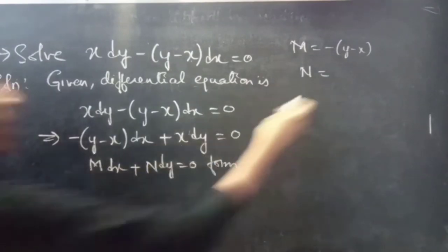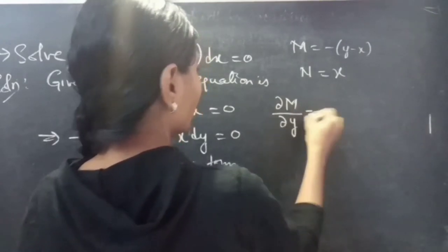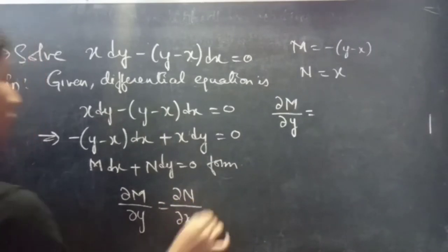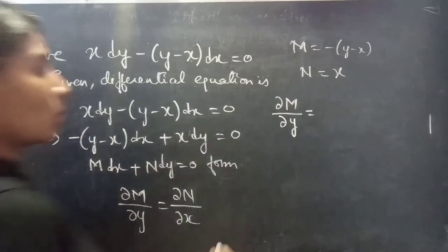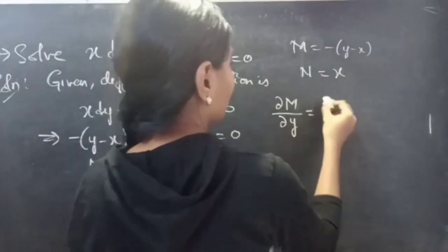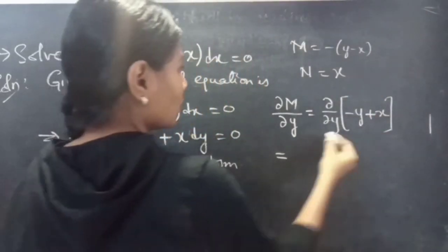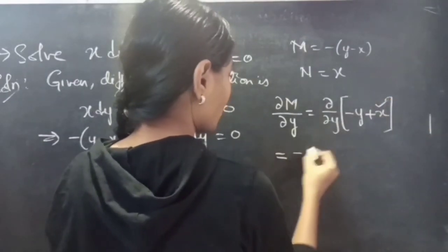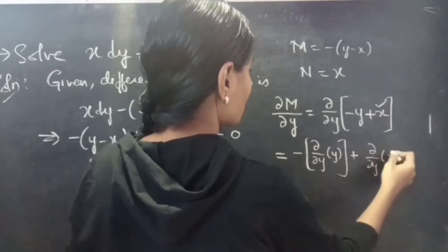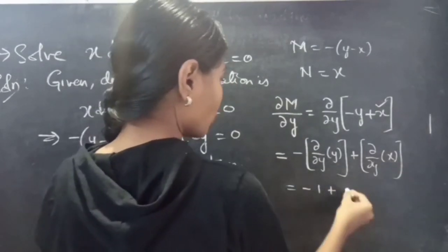So let's find the partial derivative of M with respect to y. If ∂M/∂y equals ∂N/∂x, then the given differential equation is exact. We are going to check whether the given equation is exact or not. ∂M/∂y for M equals minus y plus x: since we are doing partial derivative with respect to y, x is treated as constant. So it equals minus 1 (partial derivative of y with respect to y is 1, and partial derivative of the constant term is 0).